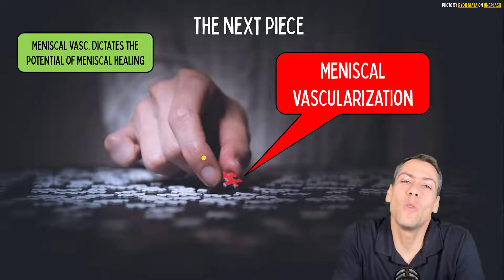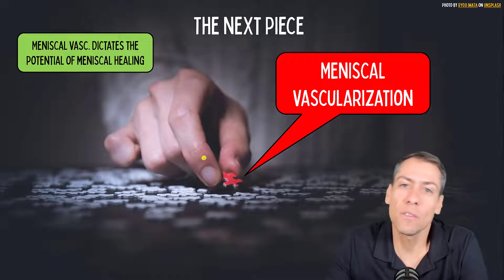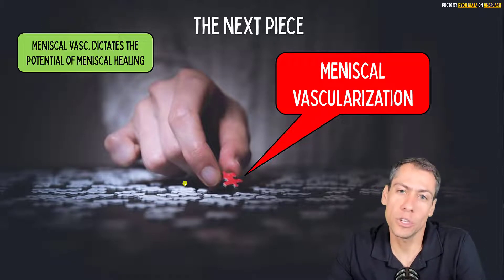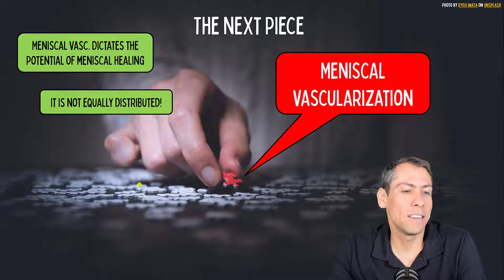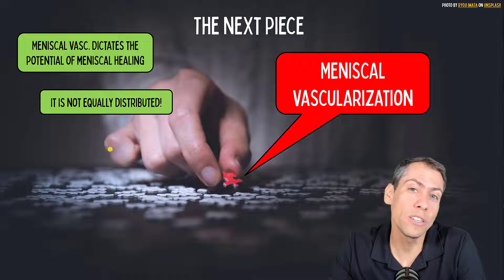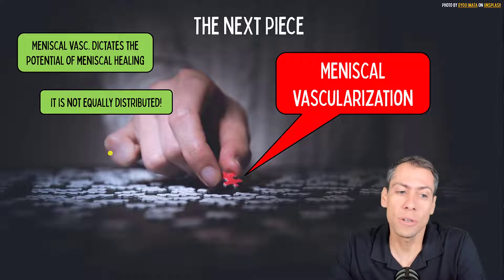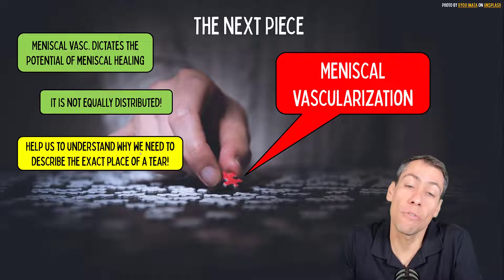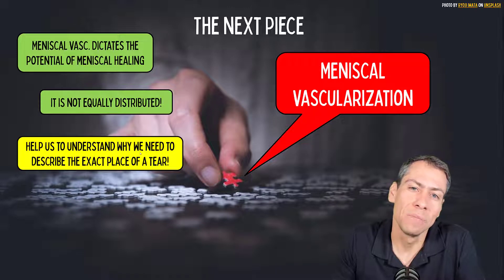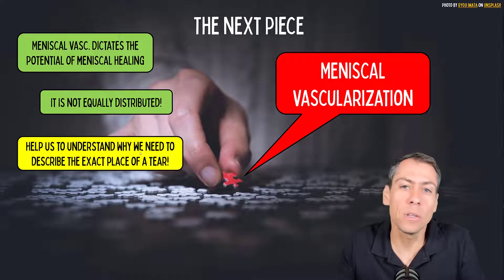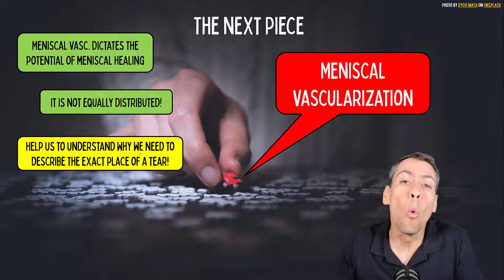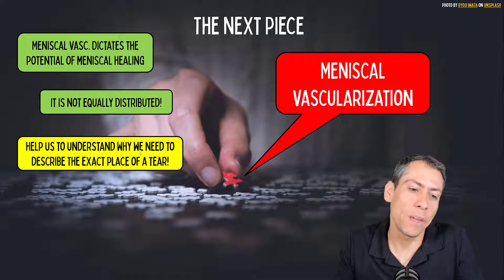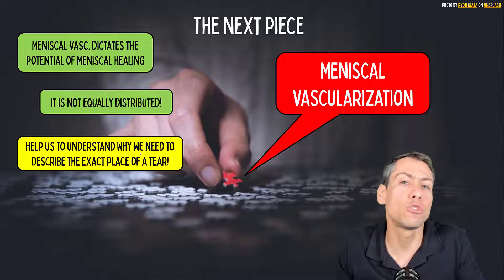Why is it so important to know about the meniscal vascularization? Because the meniscal vascularization dictates the potential of meniscal healing, and it's not equally distributed. So it helps us understand why we need to describe the exact place of a meniscal tear — so the orthopedic surgeon can think about what should be the better treatment for the patient.